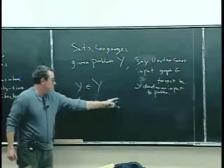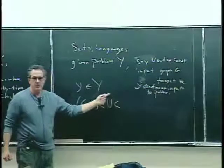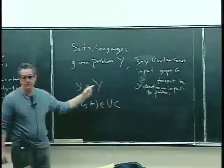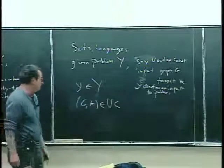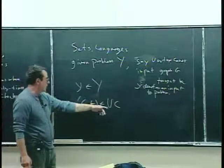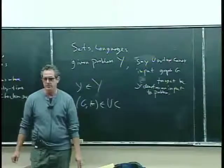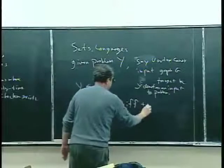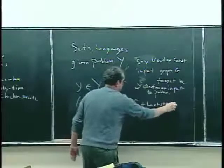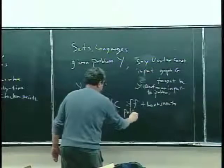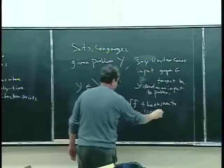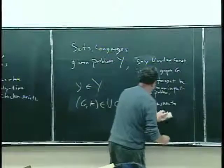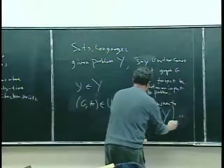You think of this as not just the name of a problem but as a set of instances, and capital Y identifies a set of instances. One of those instances — these are the instances where the answer to the vertex cover problem is yes — if and only if the answer to the problem is yes.